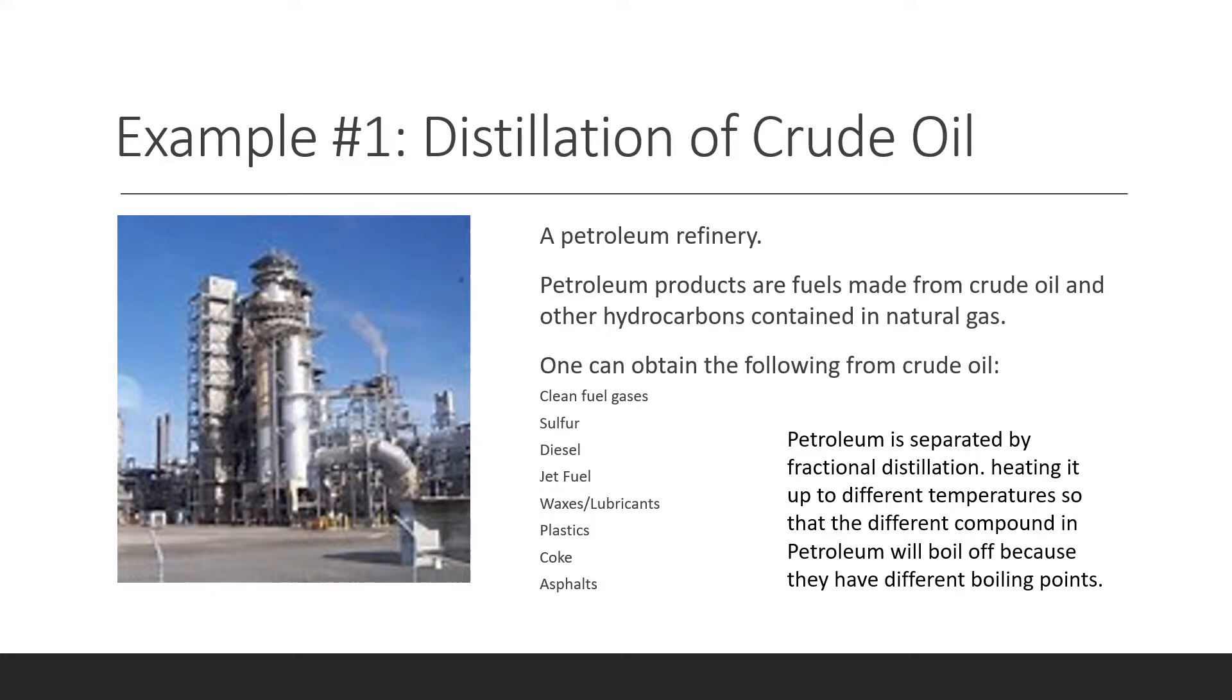So the clean fuel gases would have the lowest boiling points, and sulfur would have a higher boiling point than the clean fuel gases. Diesel would have a higher boiling point than sulfur, and so on, until we reach asphalts, which have the highest boiling point.